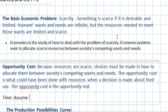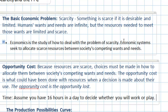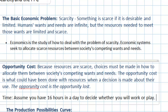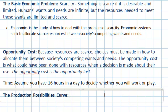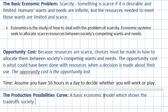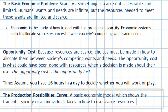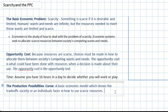Let's assume you have 16 hours in a day to decide whether you will work or play. We assume 24 hours in a day but you sleep for eight of them, leaving 16 during which you can either work or play. In a 16-hour day you must make decisions about how to allocate the scarce resource of time. Those different choices can be shown on a basic economic graph — that brings us to the production possibilities curve, a basic economic model which shows the trade-offs an individual or society faces in how to use scarce resources.